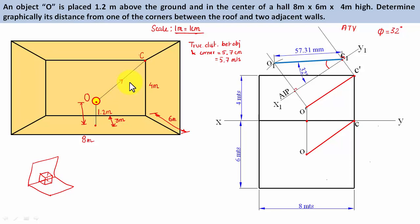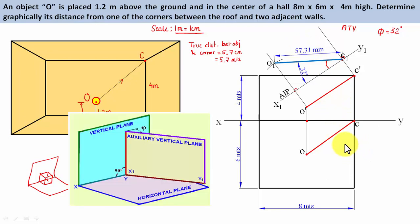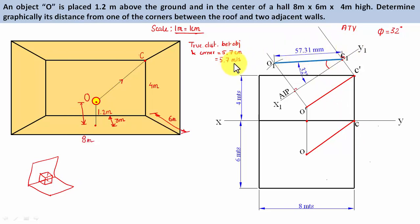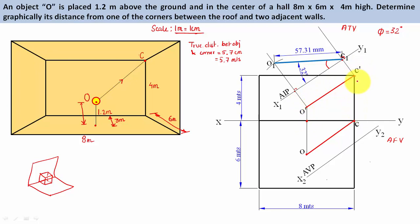If you don't believe the result, we can verify it using an auxiliary vertical plane and calculate whether the true length is really 5.7 meters. For that, we use the auxiliary vertical plane onto which we'll project the auxiliary front view. To make this front view, we take distances from the front view as reference with respect to XY and plot them with respect to X2Y2. First, produce lines from O and C so they intersect X2Y2 at 90 degrees.